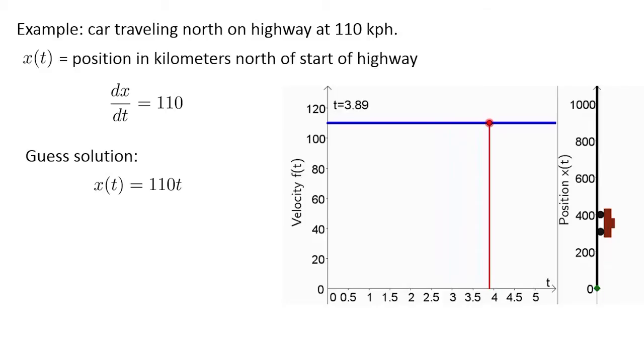Since this equation is so simple, we can just guess a solution to the differential equation. A possible solution is x(t) equals 110 times t, where t is given in hours and x is given in kilometers. Since we just guessed the solution, we should check to verify that it is a solution. In other words, we should check that dx/dt is indeed 110. To do this, we simply calculate the derivative of x(t). The derivative of 110t with respect to t is exactly 110, just what we required. The function x(t) equals 110t does check out to be a solution of our differential equation. The position is increasing steadily at a rate of 110 kilometers per hour.